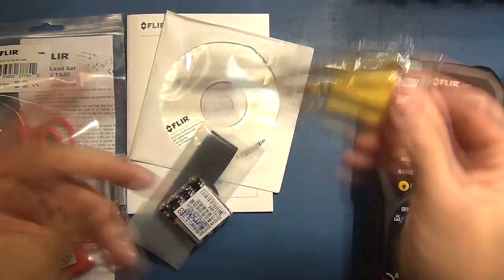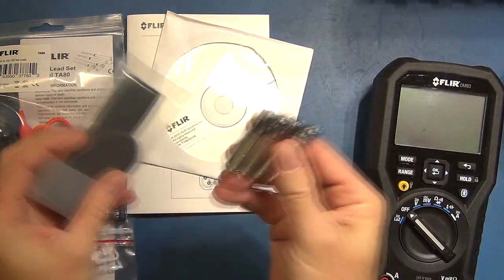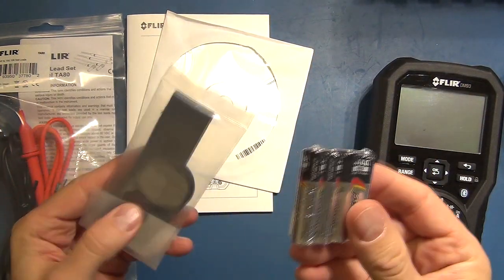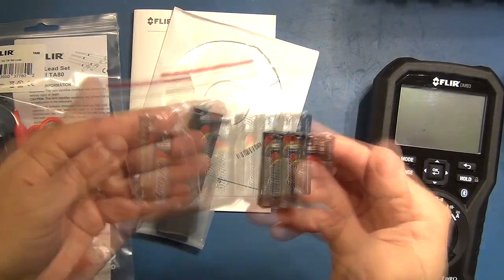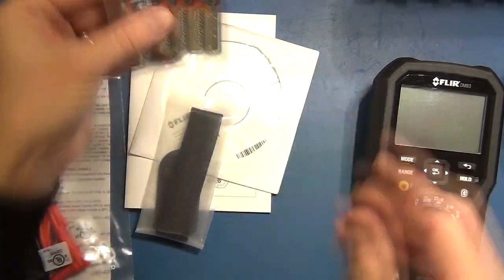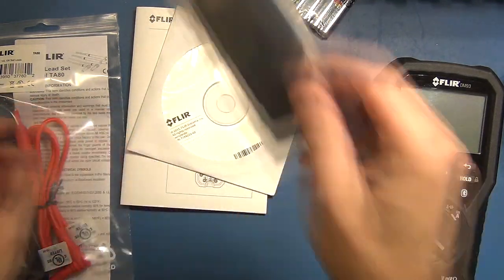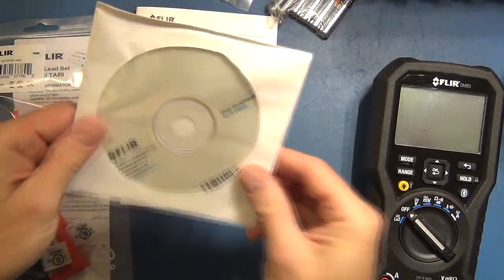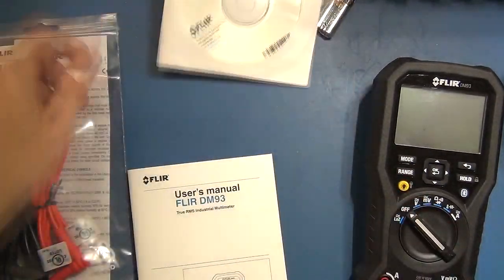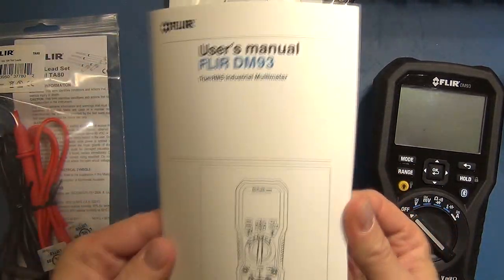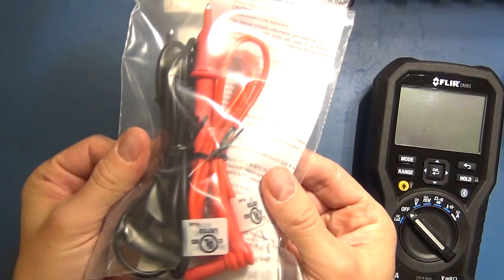It then comes with a K-type temperature probe, four triple-A batteries. In fact there's another set so I'm not sure if it's meant for six but we'll have a closer look now. It's got a magnetic hanger, user documentation on a CD, a user manual, and then it comes with a set of leads.